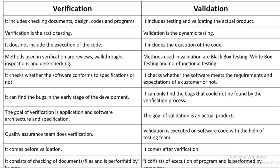In verification, it checks whether the software conforms to the specification. In validation, it checks whether the software meets the requirements and expectations of the customer. Verification can find bugs in the early stage of development, but validation is done after the verification process, so it can only find bugs that could not be found by verification. The goal of verification is application, software architecture, and specification, while the goal of validation is the actual product.